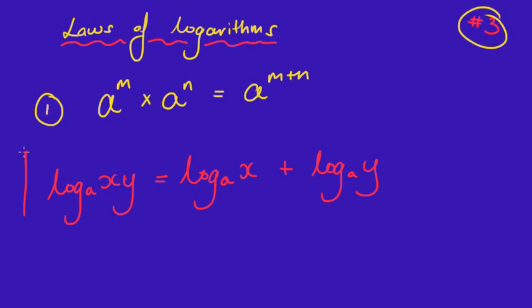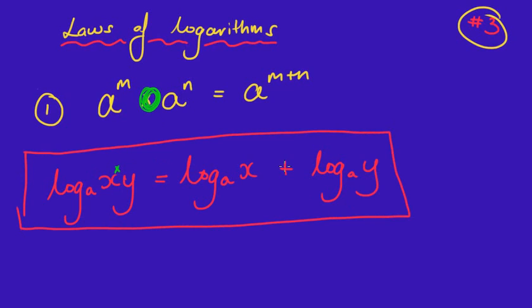Now it looks a little bit strange, I know, but you'll get used to it pretty quick. The similarity between this and the indices law that I showed you, is here we're timesing these two numbers together, x and y. When we are timesing, we plus, and you can see that there. So that's the sort of similarity there.